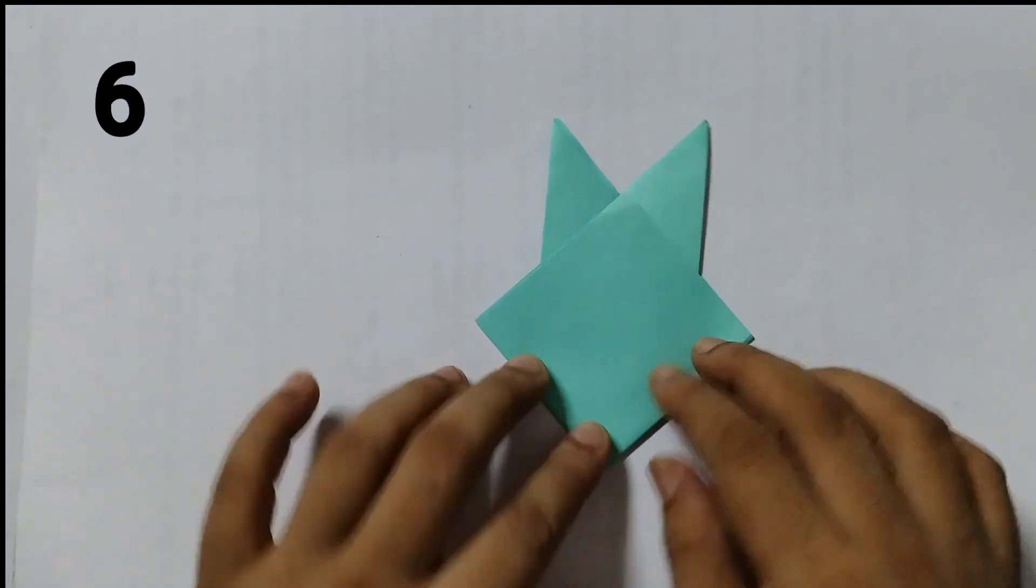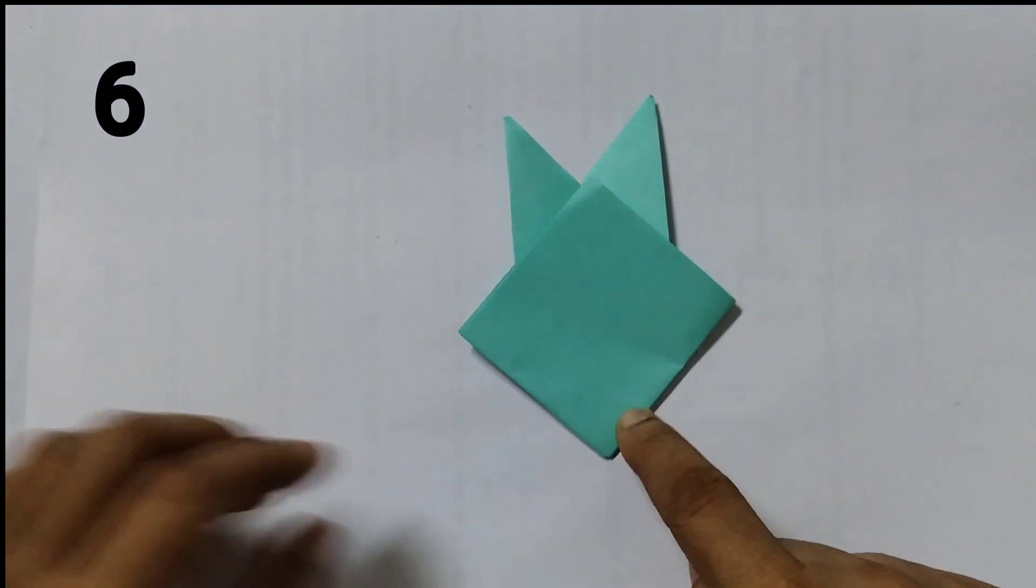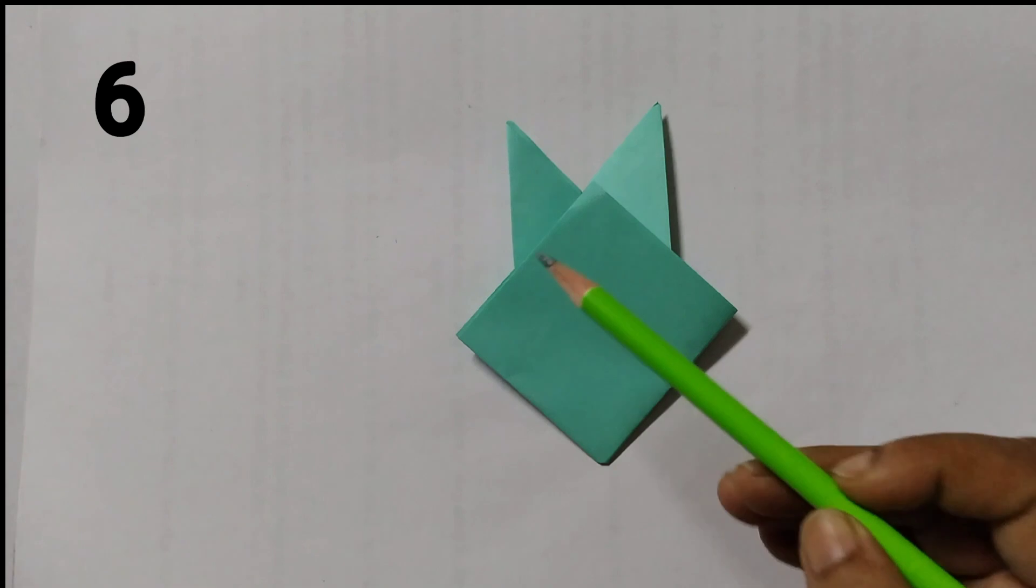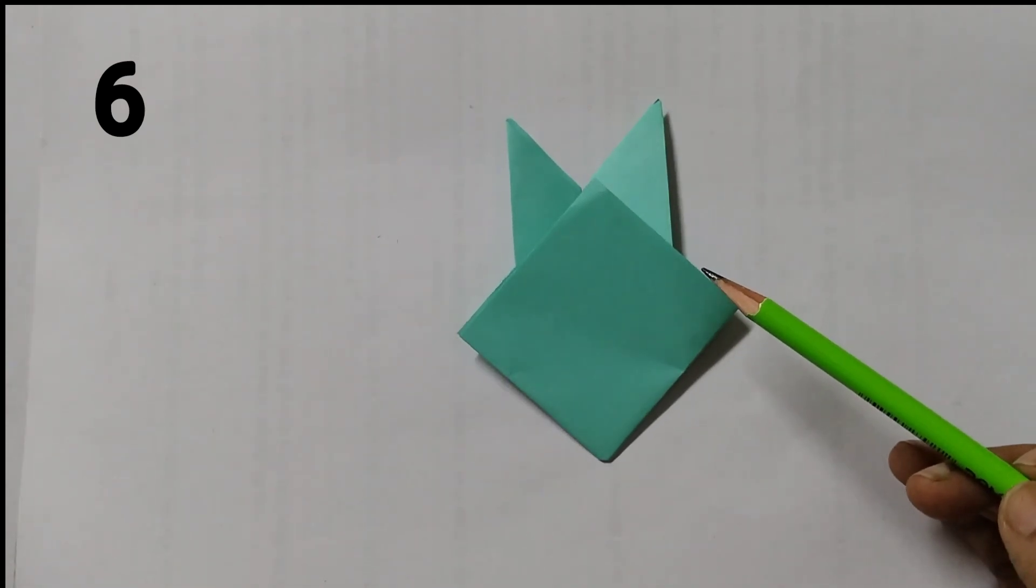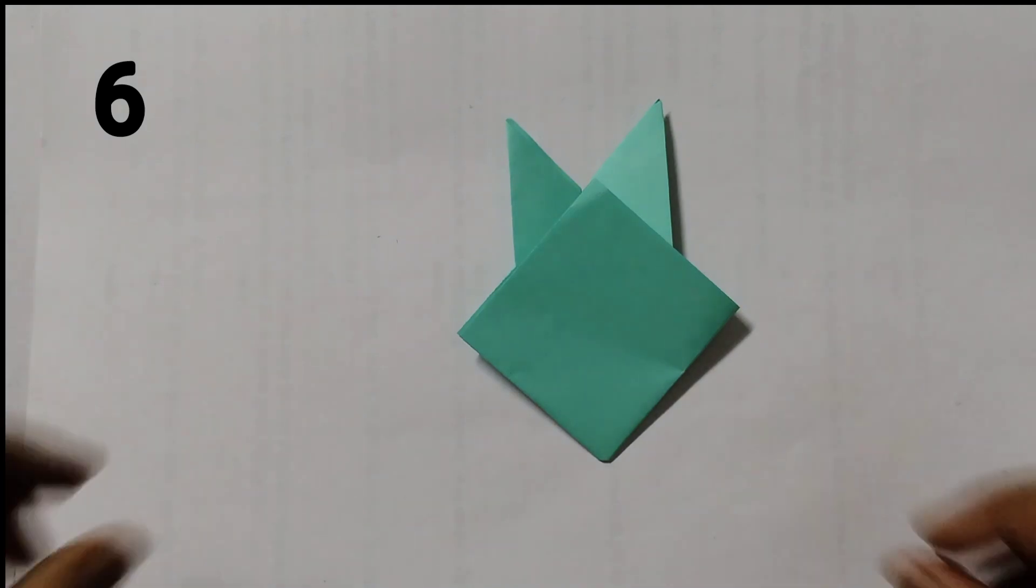Turn it like this. This is picture number 6. You see this is like a square. There are 4 sides. 1, 2, 3, 4. Now we will make it 5 sides. How do we do that? Take this part and put it inside like this.